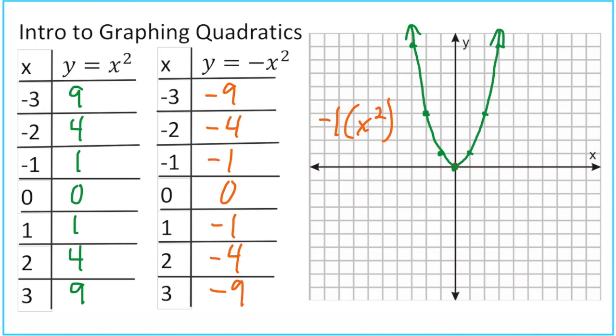Let's go ahead and graph this y equals negative x squared on the same graph so you can see the difference. We still have our vertex at 0, 0, but now when I go 1 to the right, I go down 1 for negative 1. When I go over 2, it's 2, negative 4. Then 3, negative 9. And negative 1, negative 1, negative 2, negative 4, and negative 3, negative 9. Then I'll make a nice little connection here.